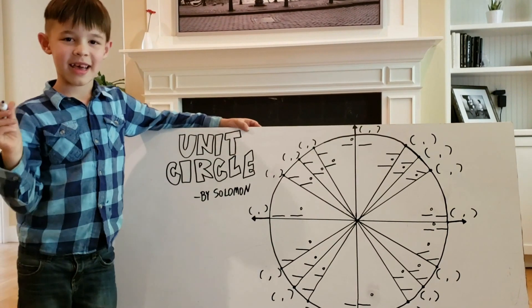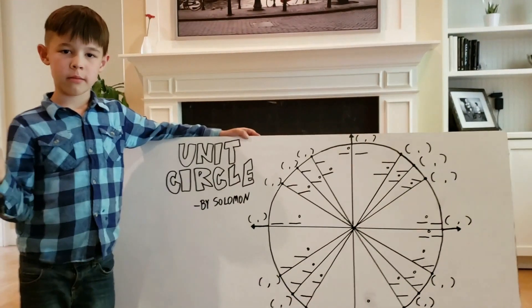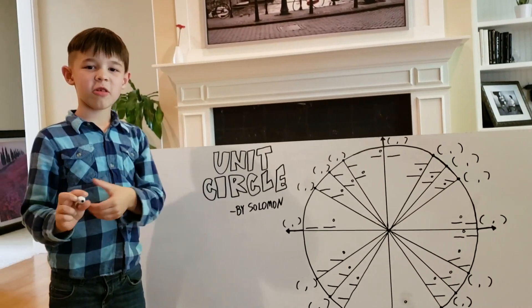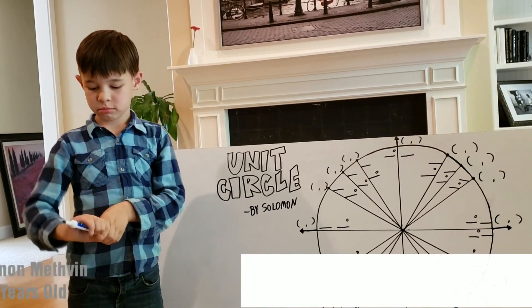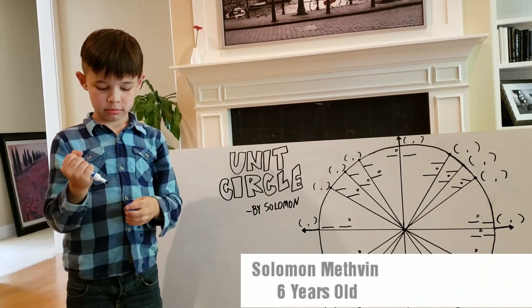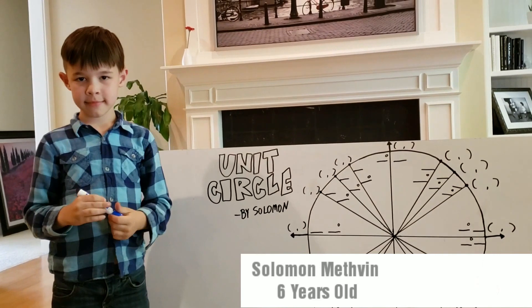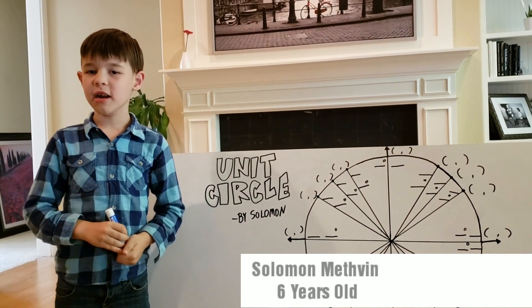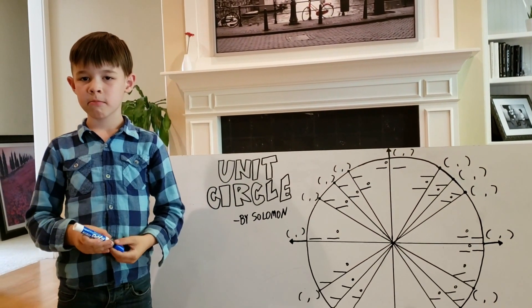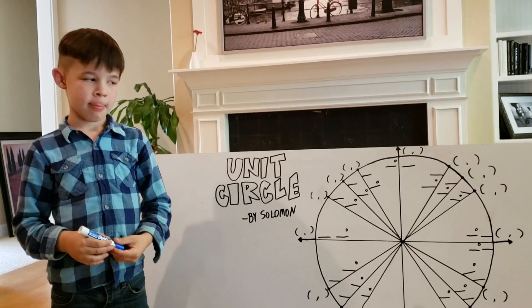Hello. Hi. What is your name? Solomon Muthen. And how old are you, Solomon? Six. And what grade are you in? Kindergarten. Great. So what do you have for us today, Solomon?